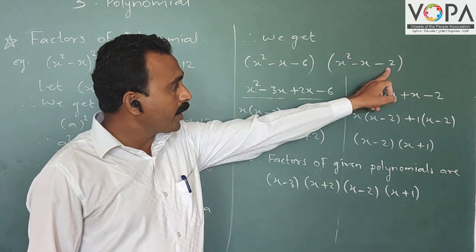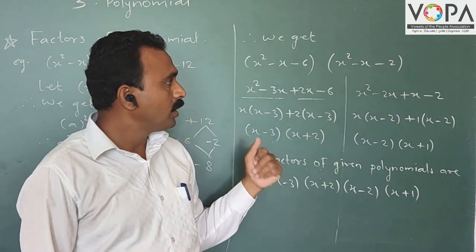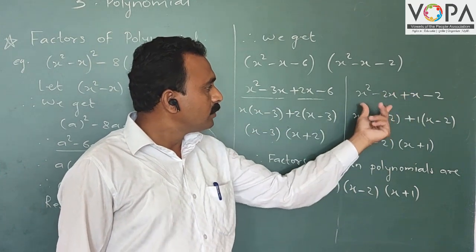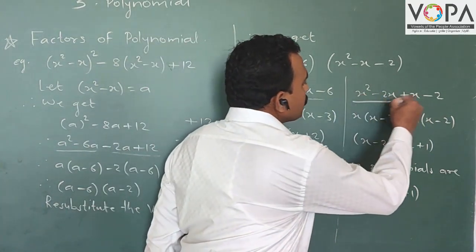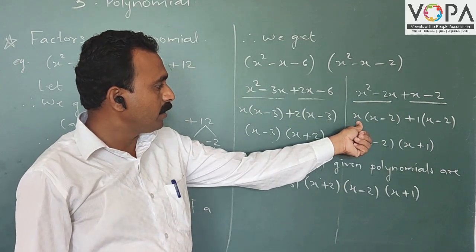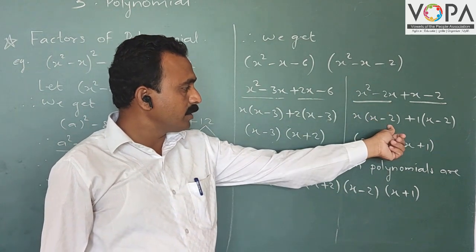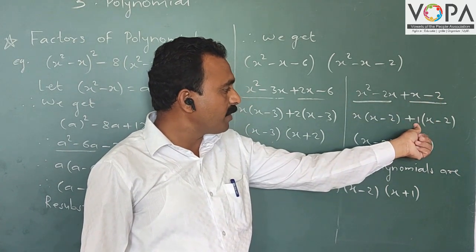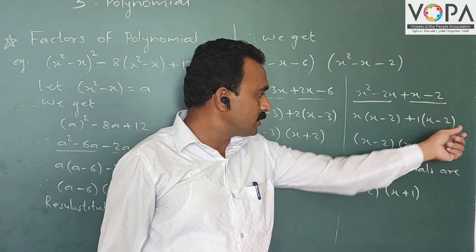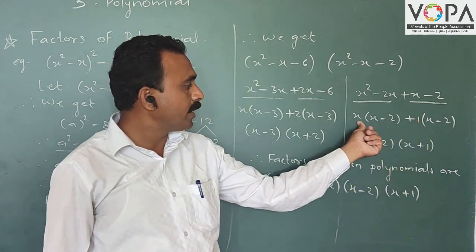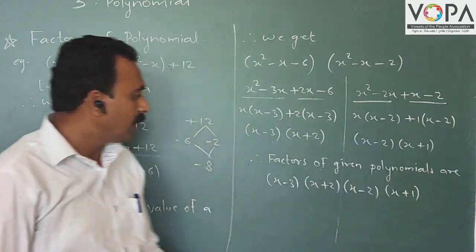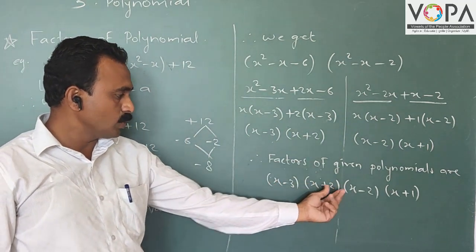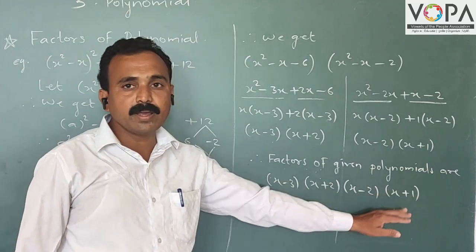For x² − x − 2: the product is −2 and the sum is −1, giving factors −2 and +1. We write −2x + x. Grouping: in the first group x is common, giving x(x − 2). In the second group, plus 1 is common, giving 1(x − 2). So the factors are (x − 2)(x + 1). Therefore, the factors of the given polynomial are (x − 3), (x + 2), (x − 2), and (x + 1).